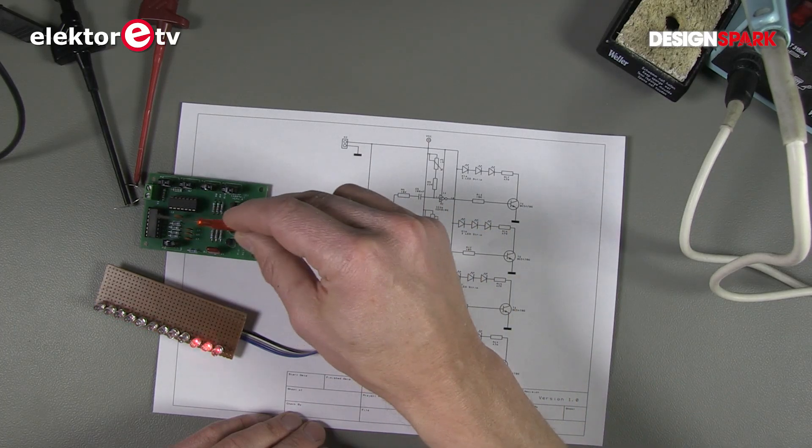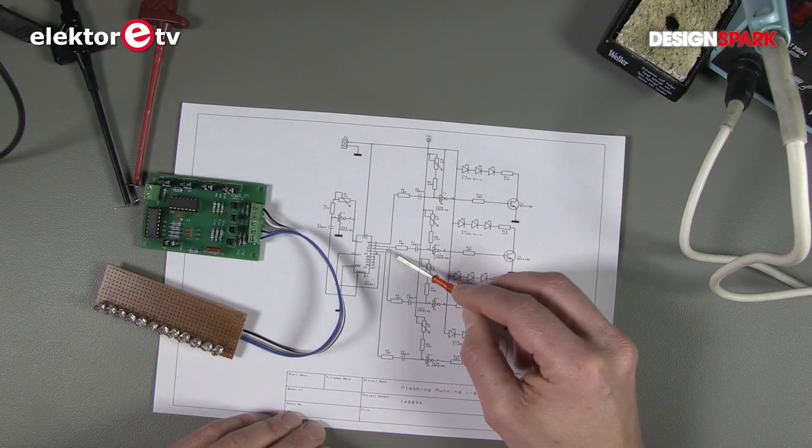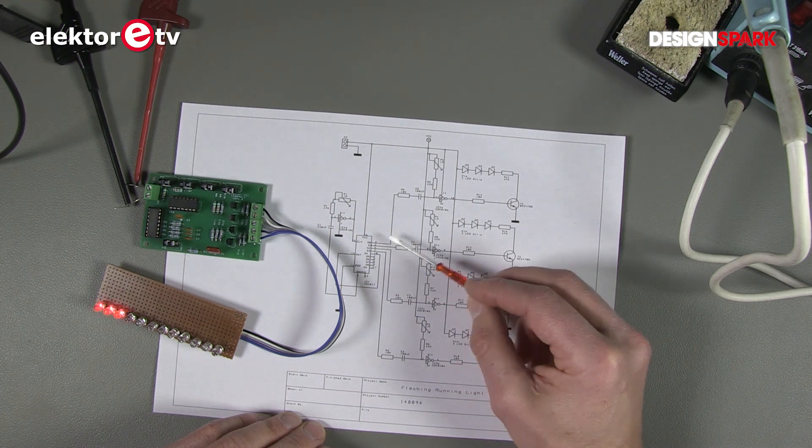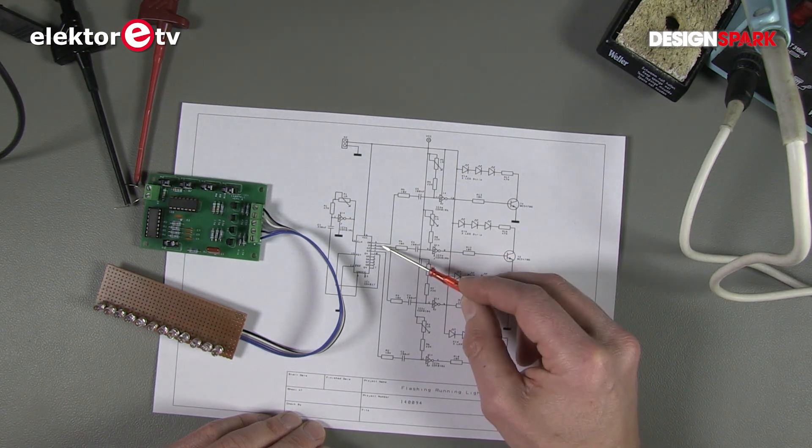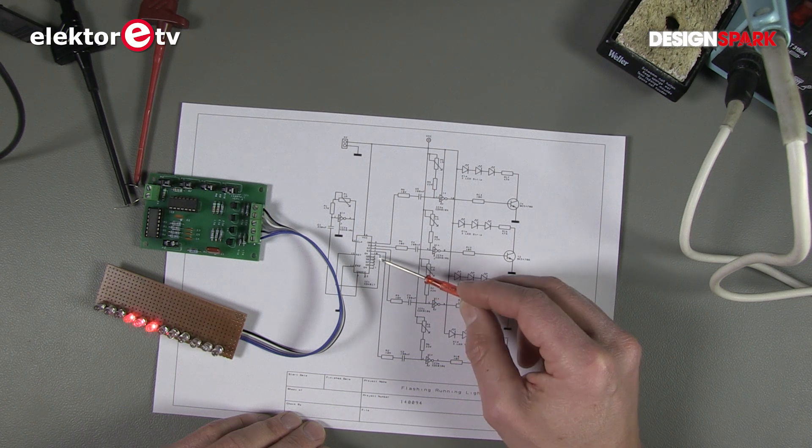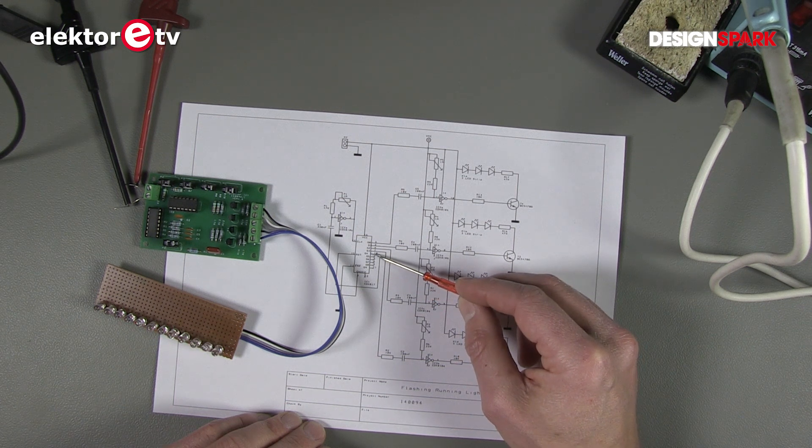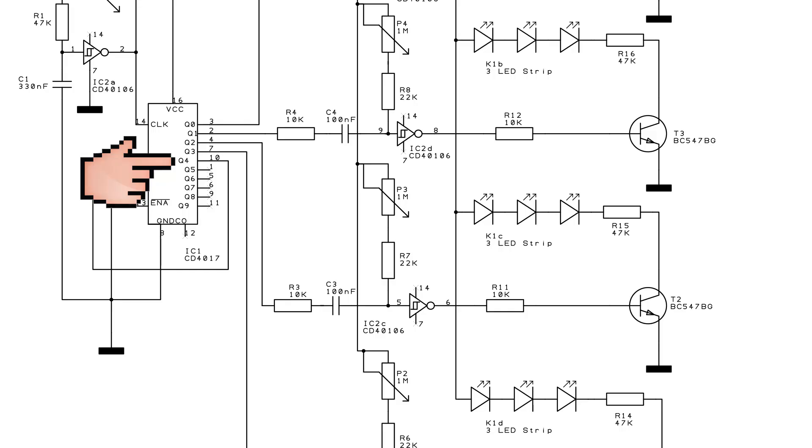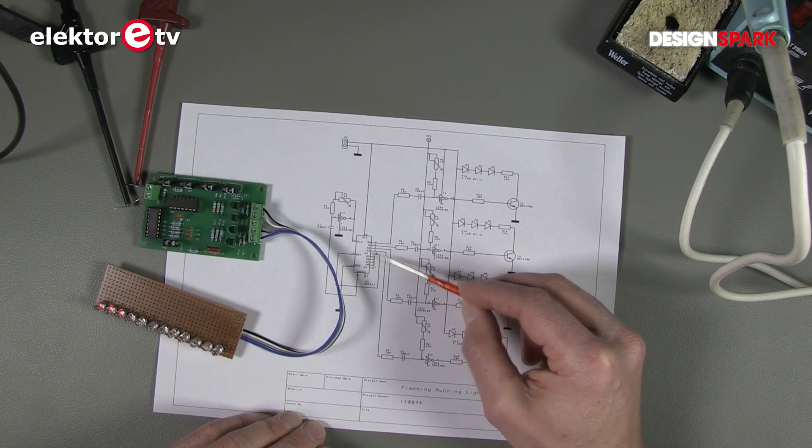And of course this is based on a CD4017. It's a Johnson counter. It has 10 outputs. We only use four. You can add more outputs if you like. And all you have to do is change this wire that's now connected to pin 10 Q4 to the last output that you want to use so that it will reset.